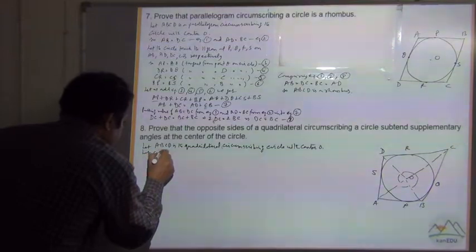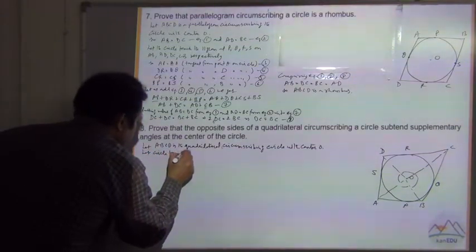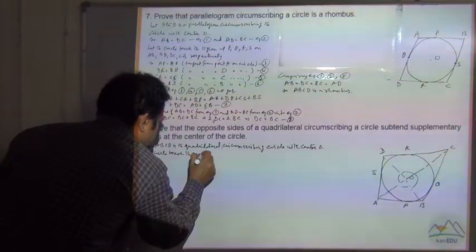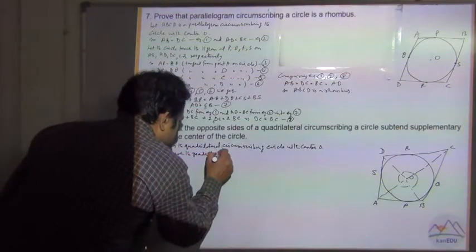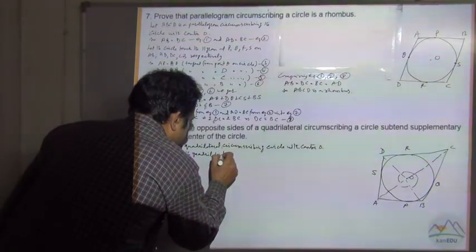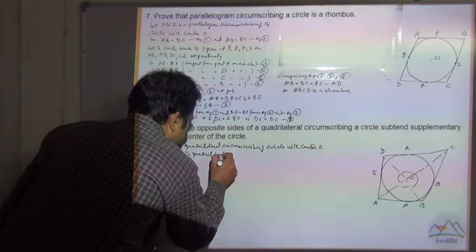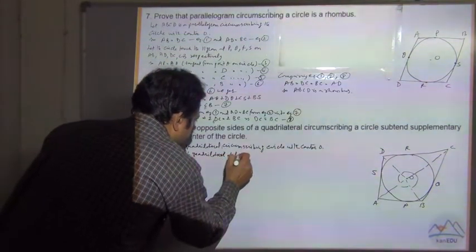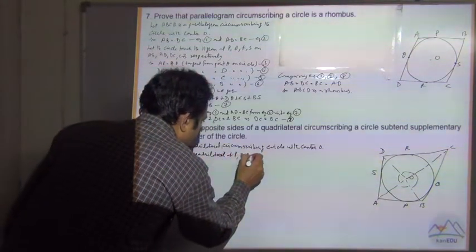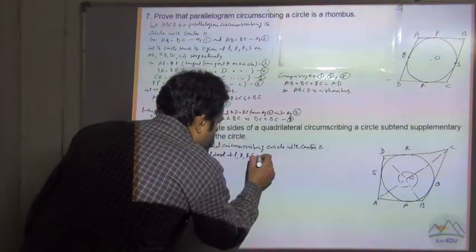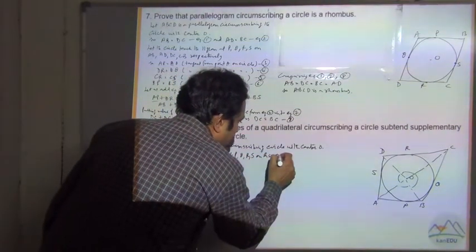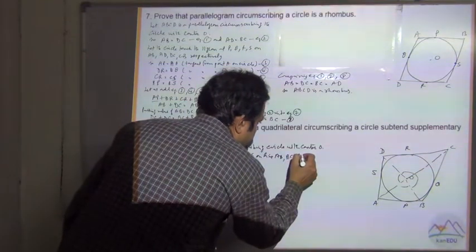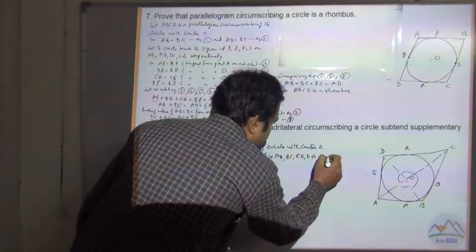Let the circle touch the sides of the quadrilateral at P, Q, R, S on AB, BC, CD, DA respectively.